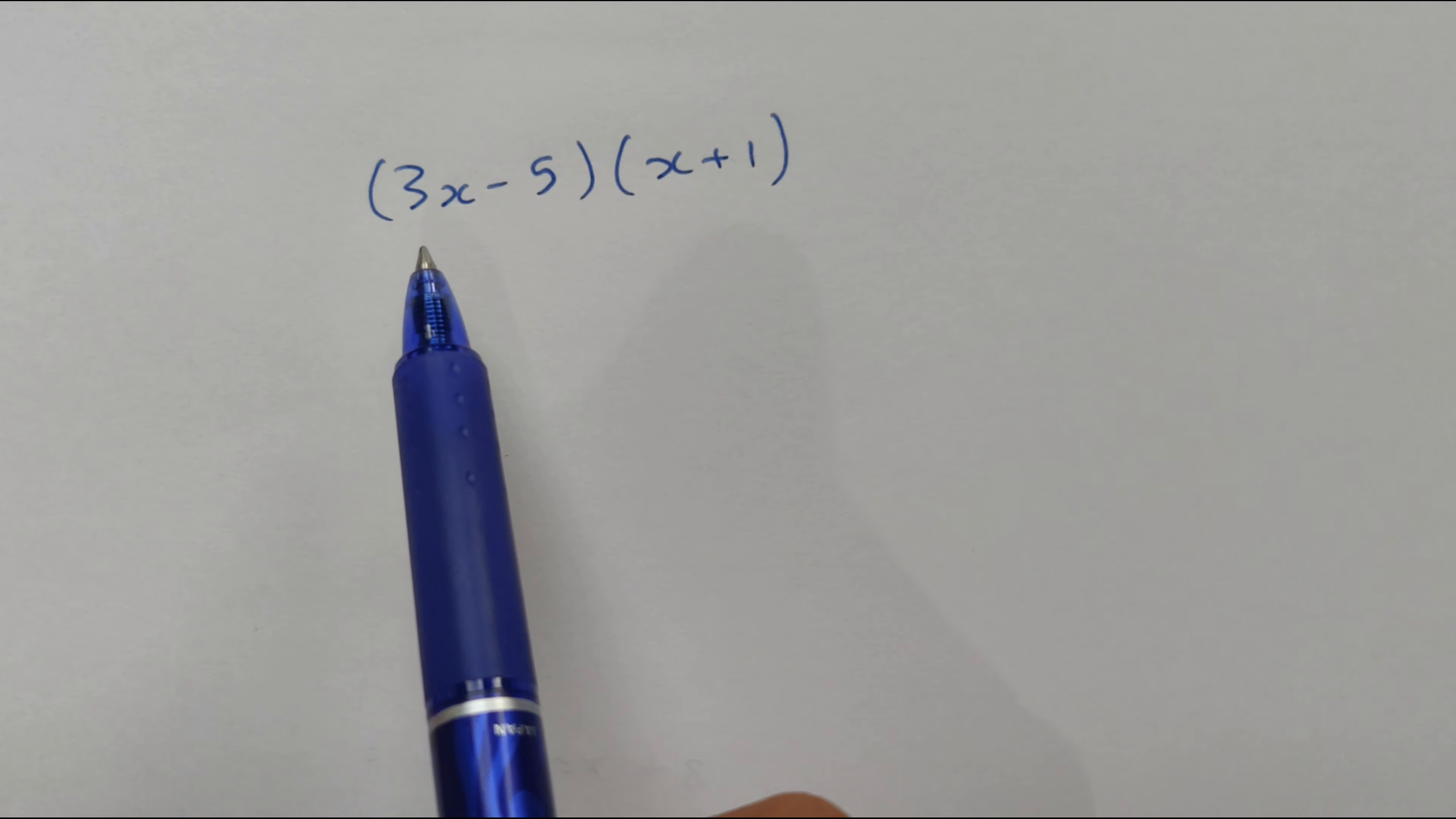Then we want to go minus 5 multiplied by x, which is minus 5x. Then we want to go minus 5 multiplied by 1, which is minus 5.